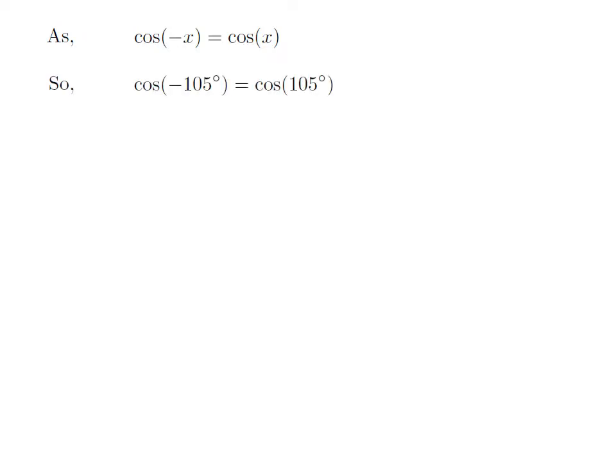Let us apply the above identity for cosine of minus 105 degrees. Here, x is 105 degrees. So cosine of minus 105 degrees is equal to cosine of 105 degrees.